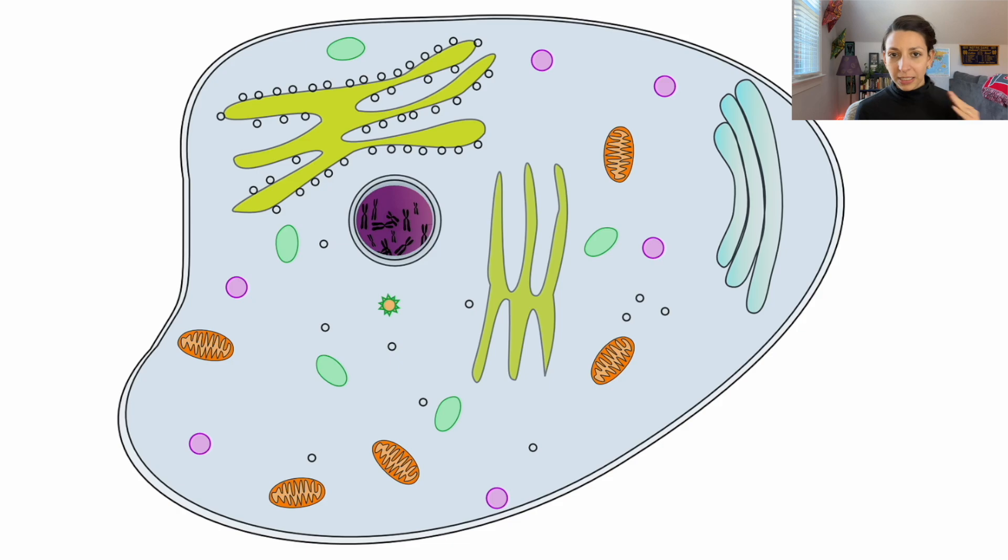Our eukaryotic organisms, including plants, animals, protists, fungi, these will all have cells with membrane-bound organelles, or organelles that are surrounded by a membrane. And we can compare different types of cells, like plant and animal cells, both eukaryotes.